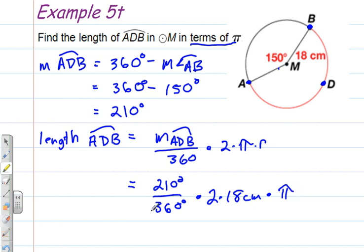And you go ahead and run that through by reducing this or running it through your calculator. It's going to give you 21 pi. To run this through your calculator, you do 210 divided by 360 times 2 times 18. Just tack the pi on at the end. Don't use 3.14 or the pi button on your calculator.